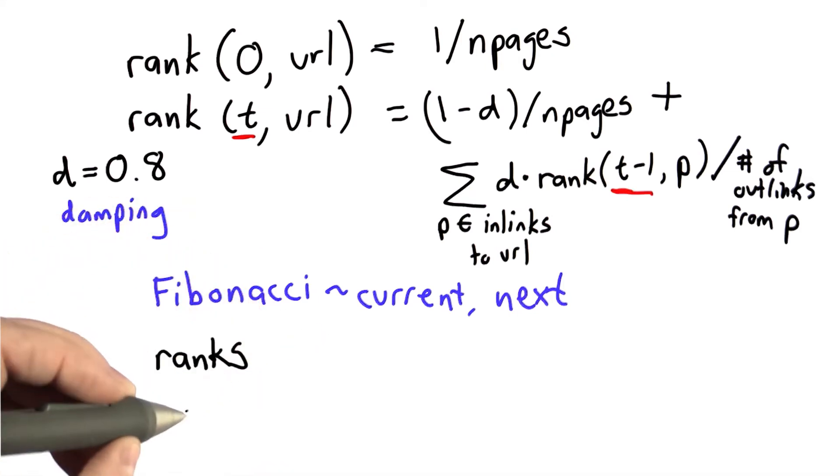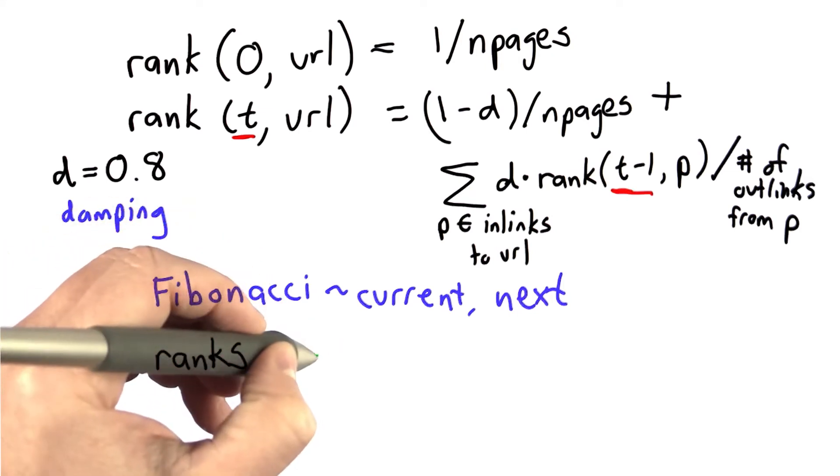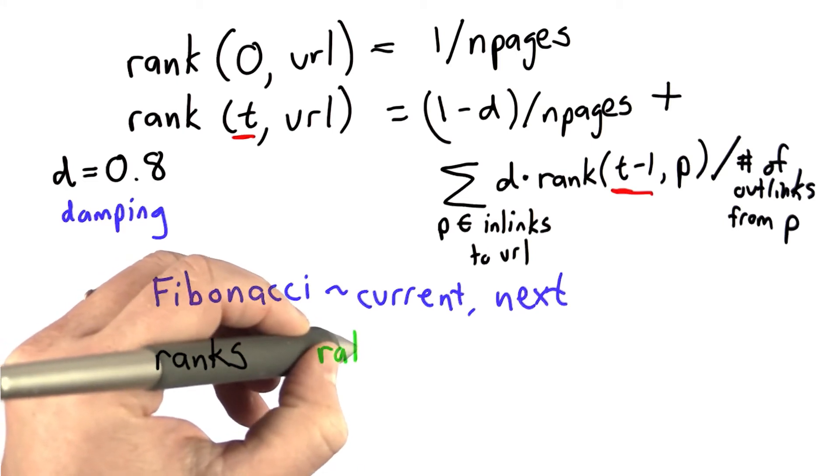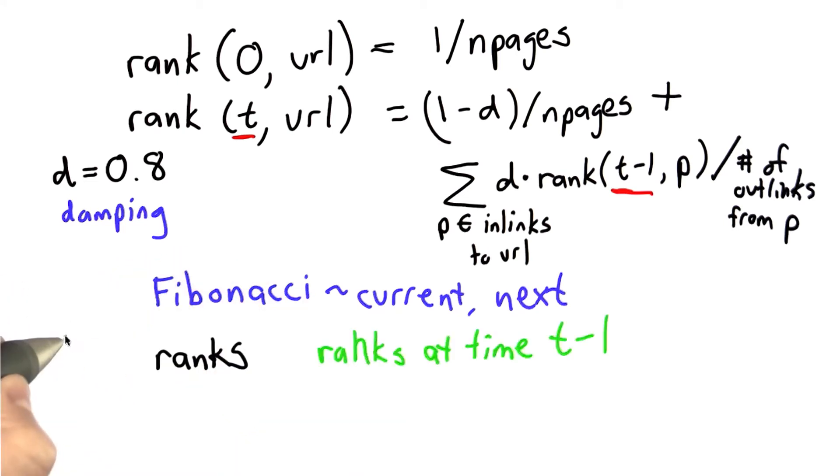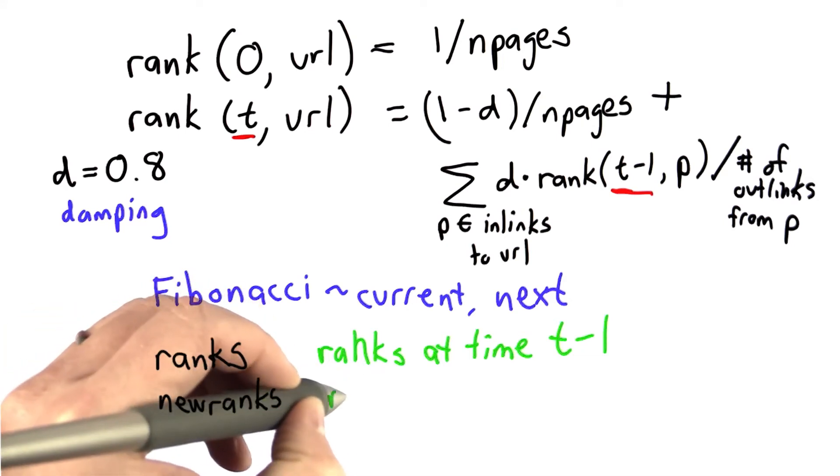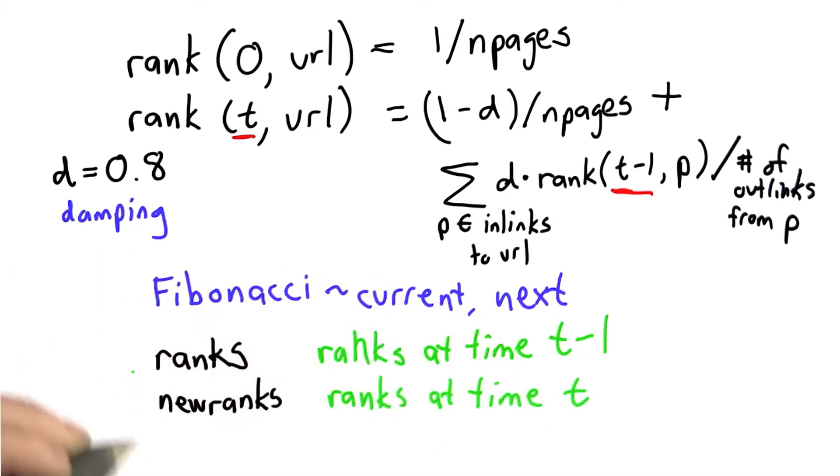So we'll use ranks. This corresponds to the ranks at time t minus 1, the ranks at the previous iteration, and we'll have a variable newranks, which is the ranks at time t. And the reason we need both of those...